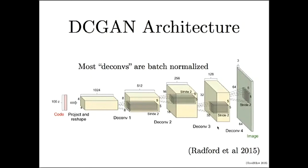Another interesting idea was how to handle pooling layers in the generator network. Traditional convolutional networks had pooling layers that take the maximum or average of large regions every few layers in order to shrink the representation. In a generator network we need to do the inverse — expanding the spatial size at each step. Since max pooling is not invertible, the DC-GAN paper simply uses deconvolution with a stride of two or greater to increase representation size, with no need to explicitly invert the pooling operation.